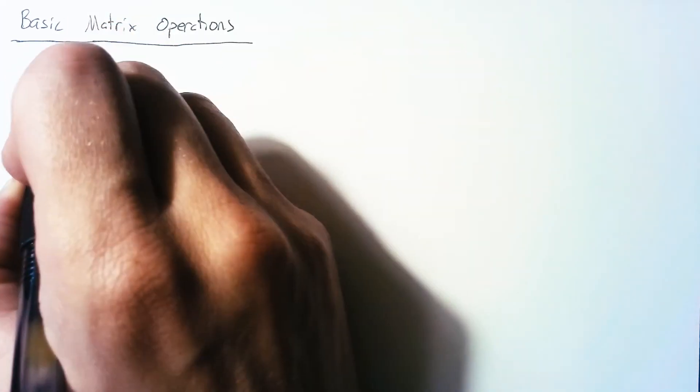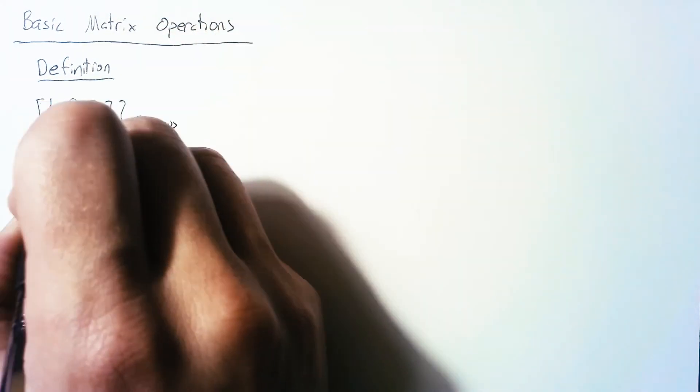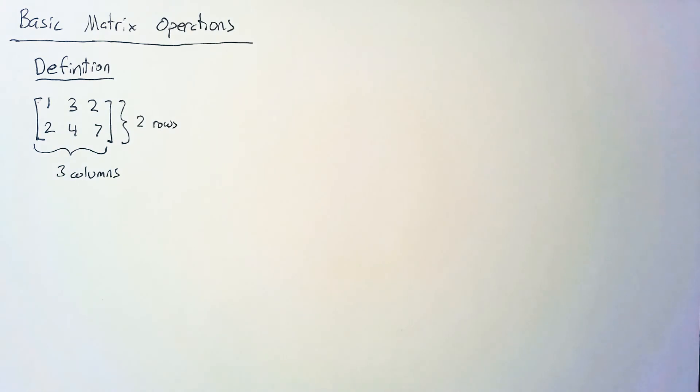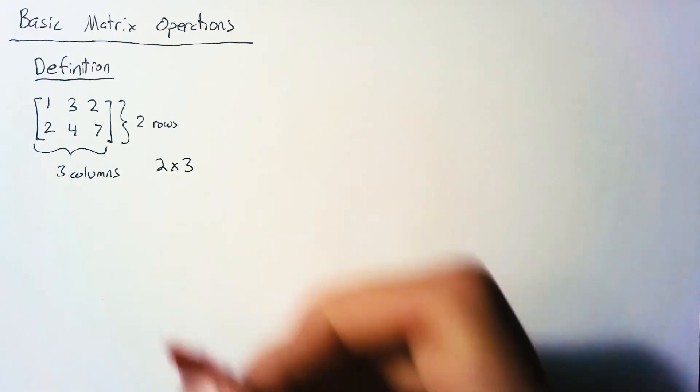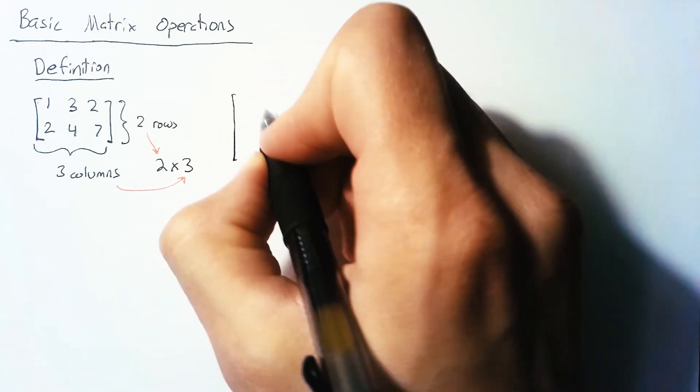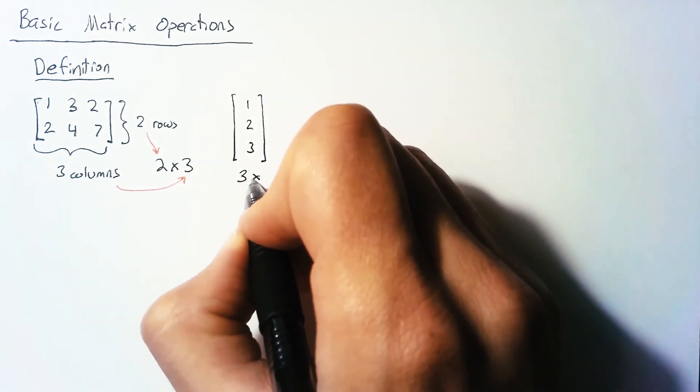We're going to cover four different operations, and I want to have a small note on how we define these. For matrix definition, let's say we have some matrix. This matrix has a number of rows and columns, and with these two pieces of information we define the shape of the matrix. This is a 2×3 matrix from the two rows and three columns. If we have a matrix that is three rows and one column, this is a 3×1 matrix.